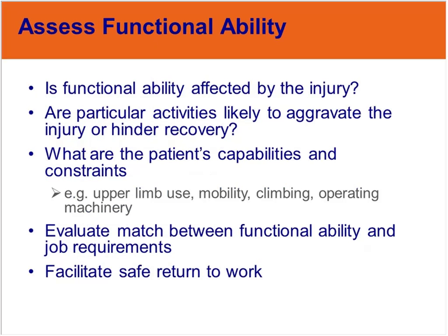The next considerations outline assessing the patient's functional ability. The most important questions are: is the patient's functional ability affected by the injury at this stage? Are any particular activities at work likely to aggravate the injury or hinder recovery? And what are the patient's capabilities and constraints — for example, in regards to use of the upper limb, ambulating, climbing, or operating machinery, particularly if hand and foot controls are required? The purpose of this part of the assessment is to evaluate the match between the patient's functional ability and the job requirements in order to facilitate a safe return to work.